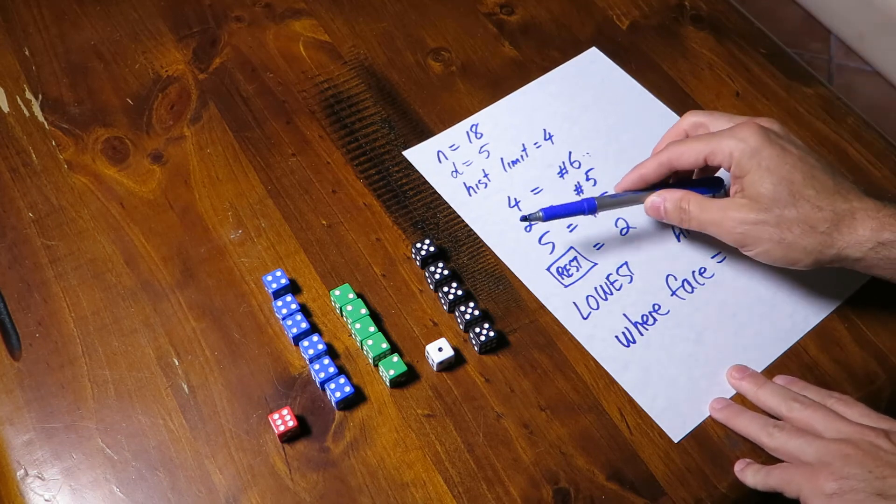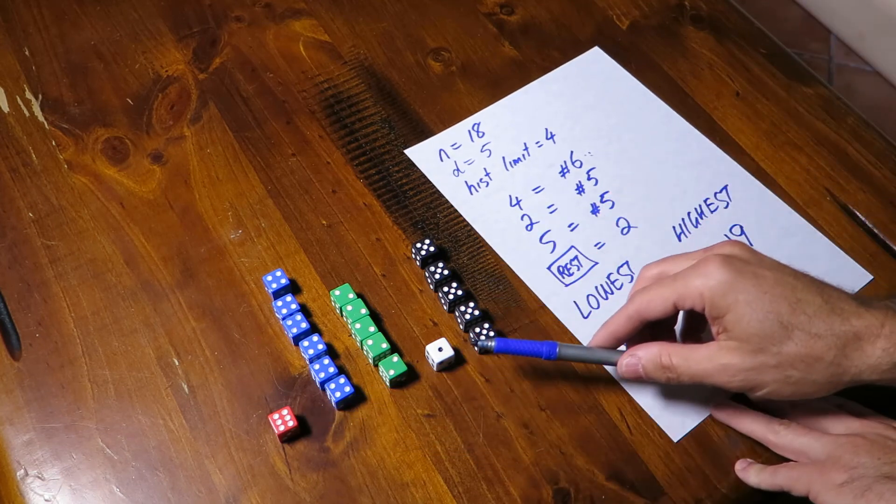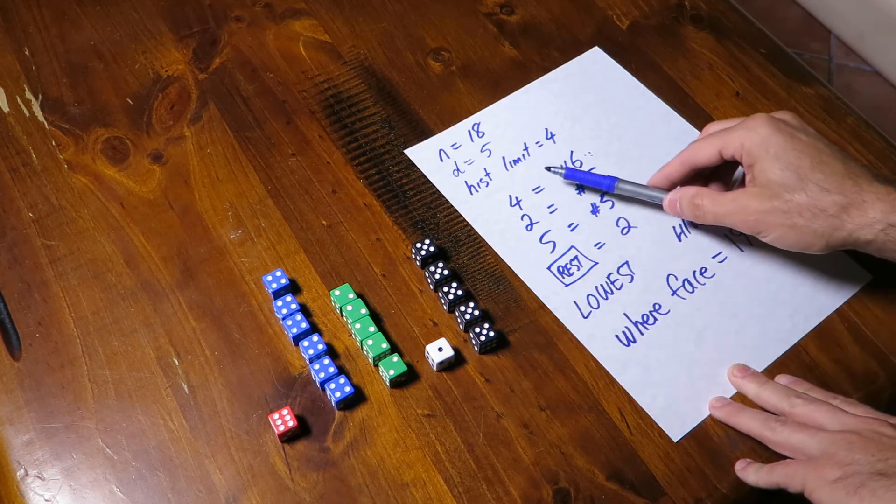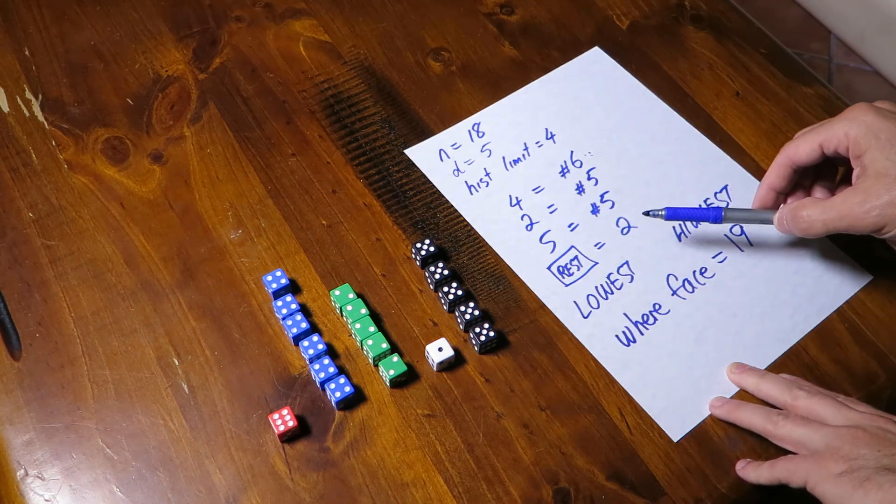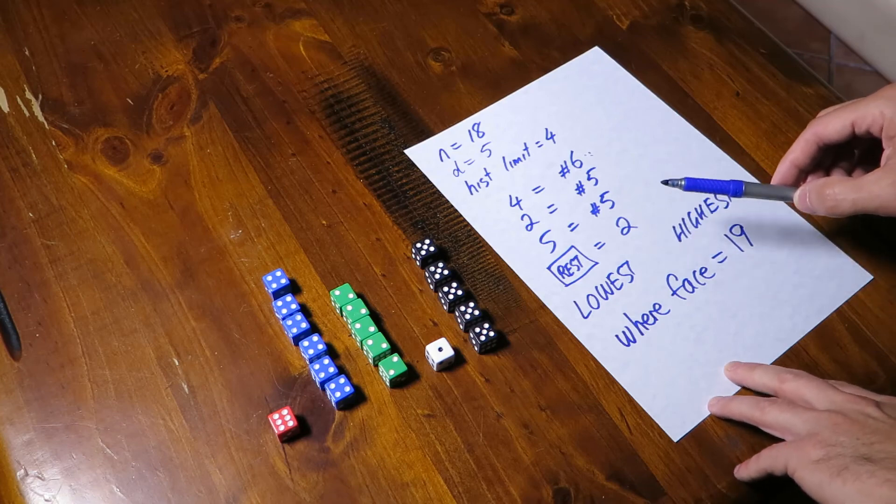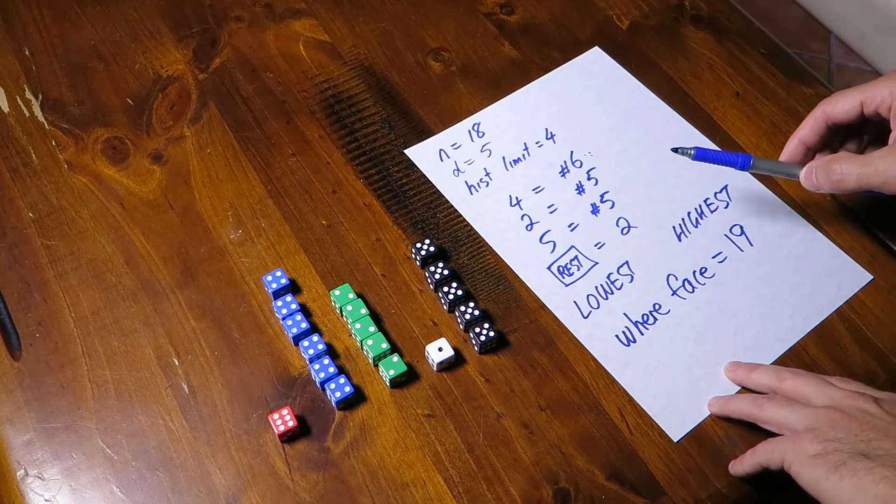So we need not just histogram buckets to store frequency information. We also need to at least know that the histogram buckets will cover the lowest value and the highest value. And we can see here that the highest value is six, the lowest value is one and they're not actually included in any of our buckets.